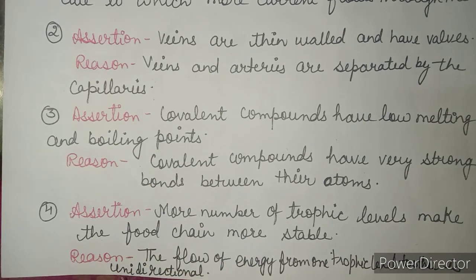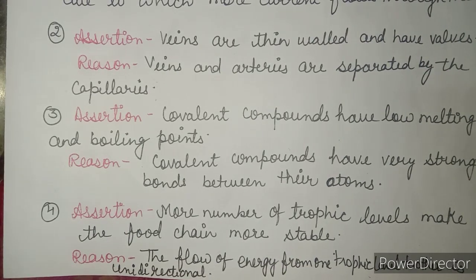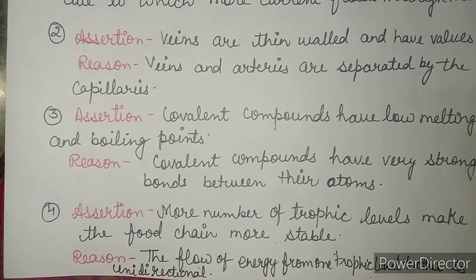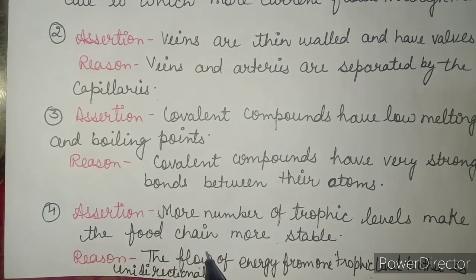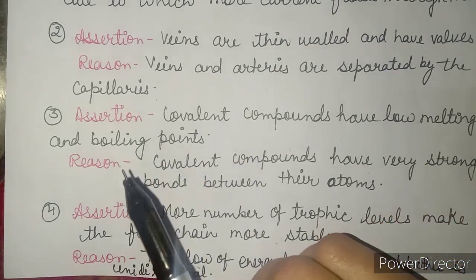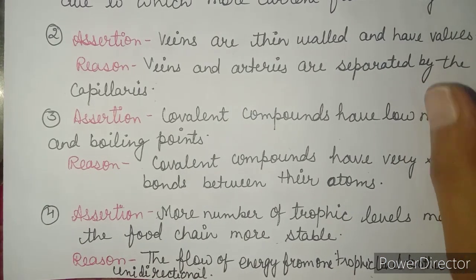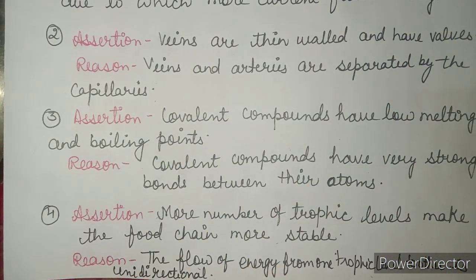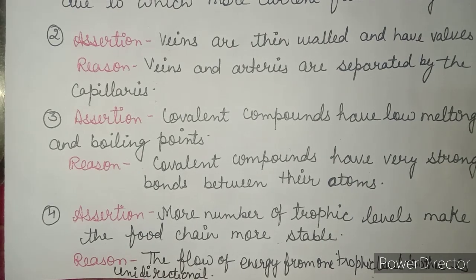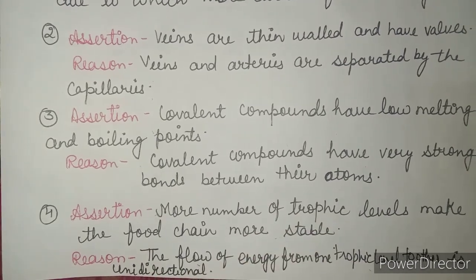So the assertion is wrong. The reason is: the flow of energy from one trophic level to the other is unidirectional, which is correct. So our assertion is wrong and the reason is true — option D is correct. That was all about assertion and reason questions. I hope this video helps you in your board examination and other competitive exams. Revise them and do proper preparation. All the best, have a wonderful day ahead.